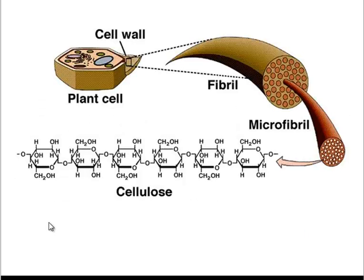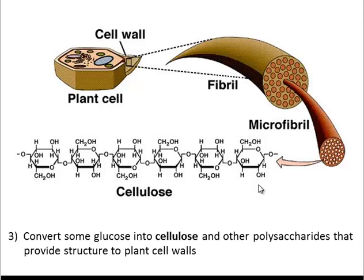Plants might also take this glucose and put it together in a slightly different order and produce cellulose. Cellulose is another polysaccharide, a complex carb, and it provides structure to plant cells. So the cell walls of plants are made up of cellulose along with some other polysaccharides, all of which are made from glucose.